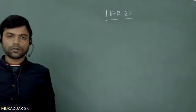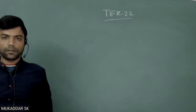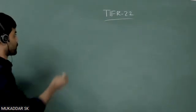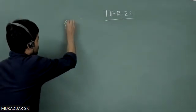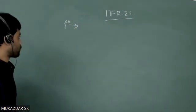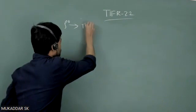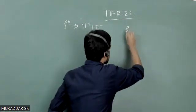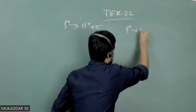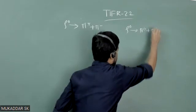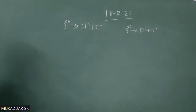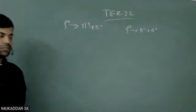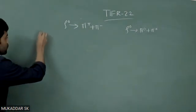Hello students, today we are going to solve a problem from particle physics. This question was basically asked in TI for 2020. In that question, they have given that a rho meson can decay by two channels: one is rho zero decays to pi plus plus pi minus, and another channel is rho zero decays to pi zero plus pi zero. The question is: what is the probability of rho zero decaying to pi plus plus pi minus?